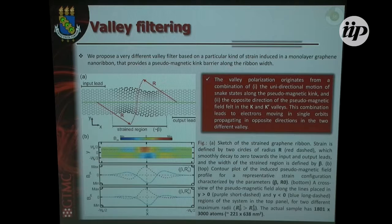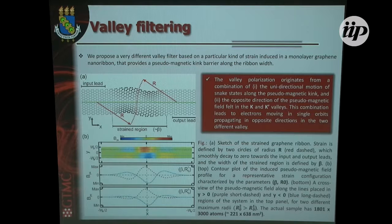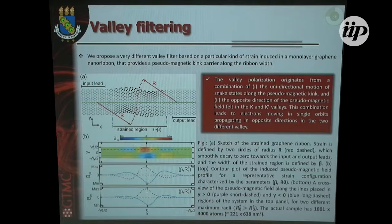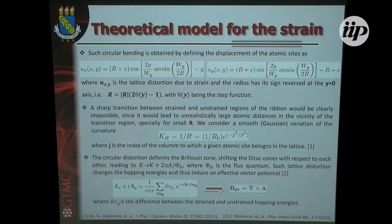If you combine the two fields and take two circular deformations, electrons traveling from left to right travel around this green line, since here you have a pseudomagnetic kink barrier. In order to make it more realistic, what we assume is a smooth Gaussian variation linking the input with the output regions through this scattering region. This is another parameter we vary to see how to achieve very efficient valley filtering.